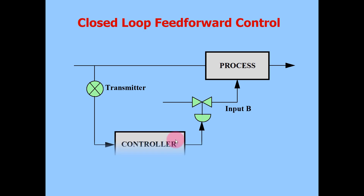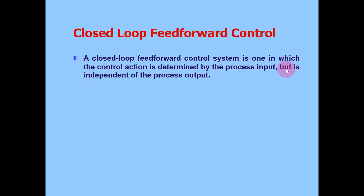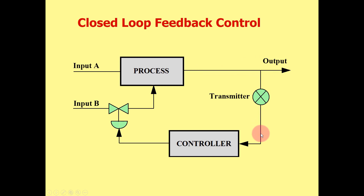Closed loop feed forward control: closed loop means the loop is closed, meaning there is a process variable feedback to the controller measured by a measurement device — an instrument or transmitter located in the field. Feed forward control means the measurement device measures the process reading at the process input. A closed loop feed forward control system is one in which the control action is determined by the process input, and measurement is taken from the process input.